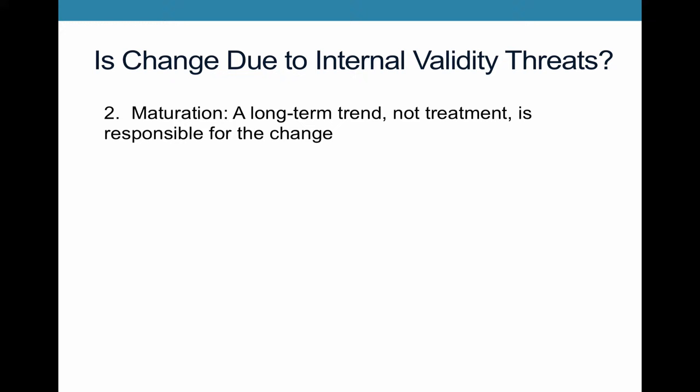A second internal validity threat to consider is maturation. And maturation is where there's a long-term trend, and that long-term trend, not the treatment, is what is responsible for the change. So thinking this through, maybe driving fatalities overall are falling throughout the country. Drivers are becoming more experienced. They're learning to read the road better, to read other drivers. And so just naturally, you're going to see a decline in rates of fatalities because drivers are just becoming better at it.